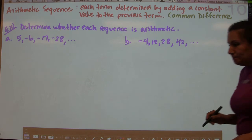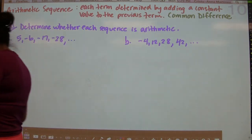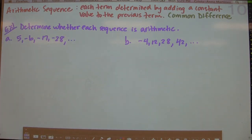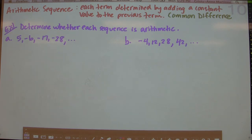There are two types of sequences we want to talk about today. The first type — and we've talked about these before in Algebra 1 — is an arithmetic sequence. An arithmetic sequence is a sequence where each term is determined by adding or subtracting a constant value to the previous term. We refer to that constant value as the common difference in an arithmetic sequence.